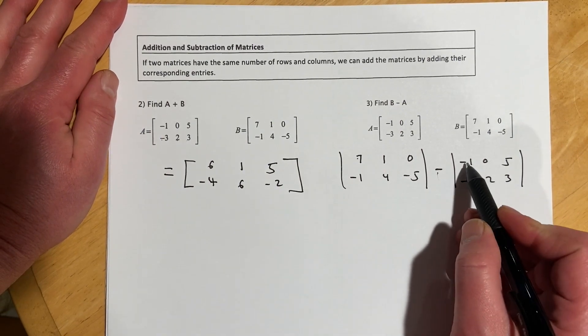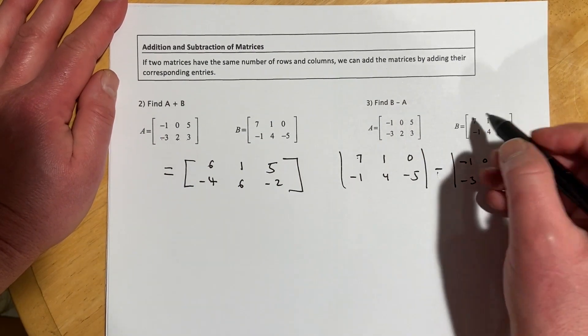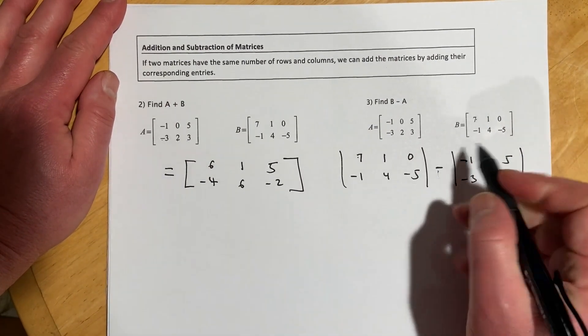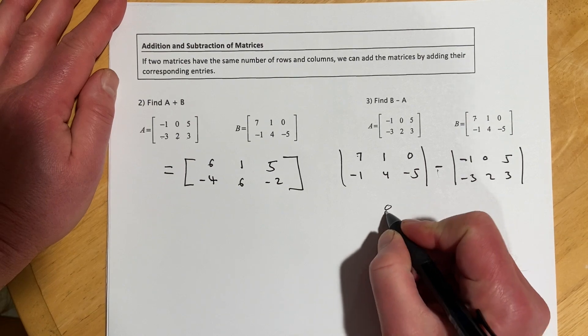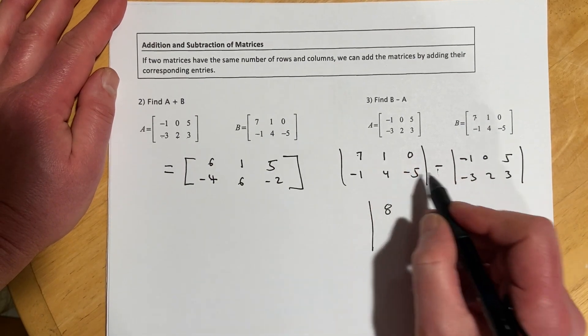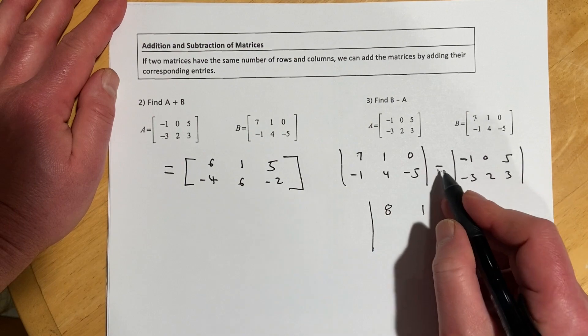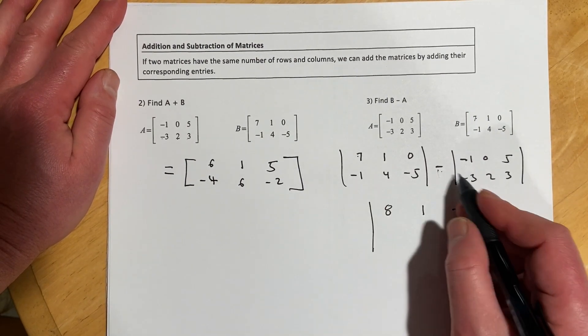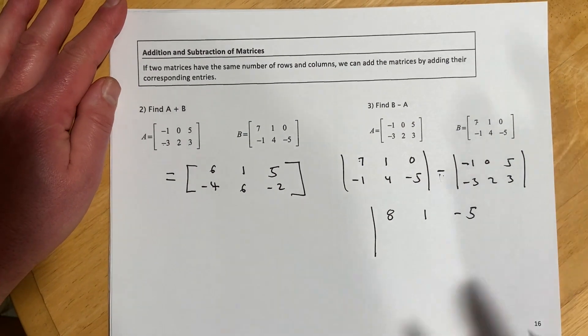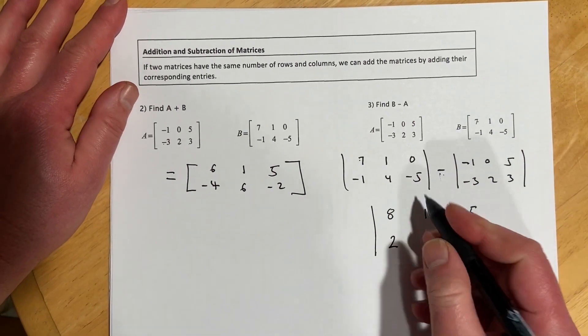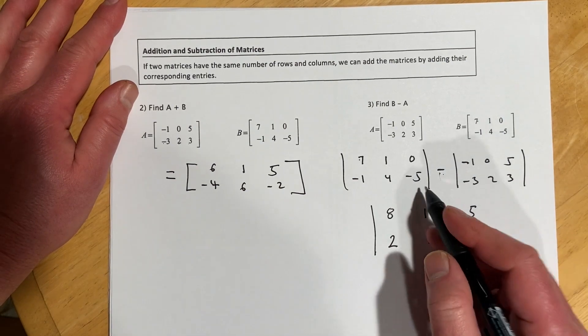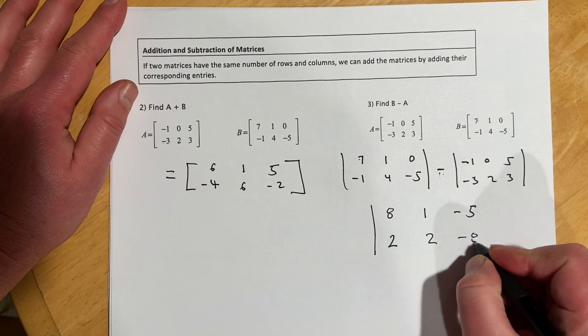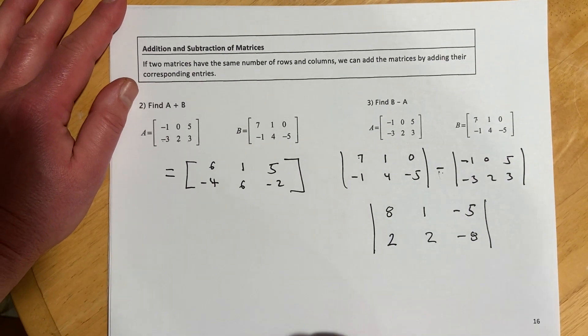So this is going to go seven minus negative one. And that's where you can get a little bit of trouble. Seven minus negative one, just sort of doing things backwards. But it's all good if you keep track in your head. So that would be an eight. And then one minus zero, so that's one. Zero minus five, that's negative five. And then negative one minus negative three is really negative one plus three. So that would be two. Four minus two is still two. Negative five minus negative three makes negative eight. So that's addition and subtraction.